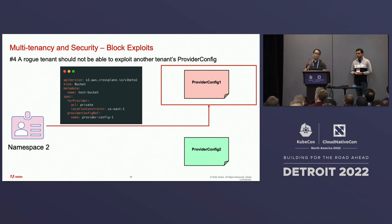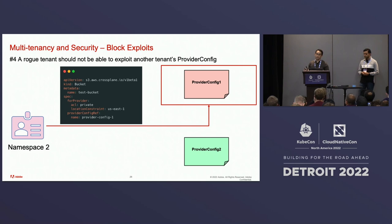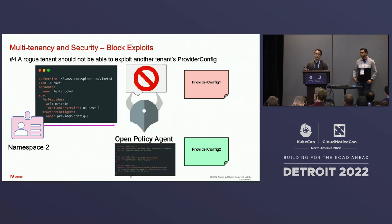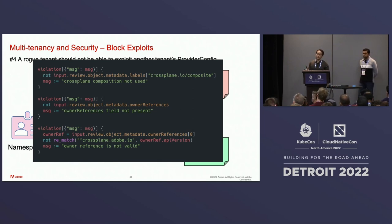The next category is blocking exploits. Even though tenants shouldn't create cluster-scoped resources, a rogue actor might try to use a managed resource manifest directly instead of going through the compositions process, which won't work correctly anyway. To solve this, we use Open Policy Agent Gatekeeper. If a request comes in that's not going through a composition, we deny it. We also deny any request where the composition is not part of an Adobe-provided composition.